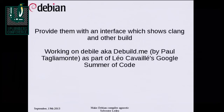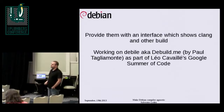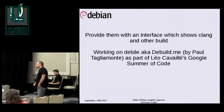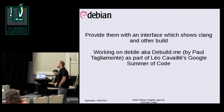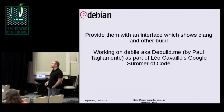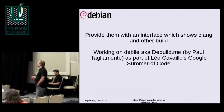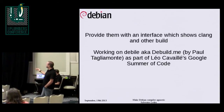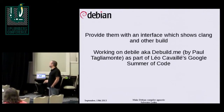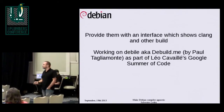The first thing we did was develop an interface that provides automatic rebuilds of every Debian package using Clang instead of GCC. This is done automatically and transparently for any new upload to the archive. The project is called Debile — for French speakers, that means 'stupid'. It was done by one American living in Boston called Paul Tagliamonte, and we worked with Leo Cavallier during Google Summer of Code on that.